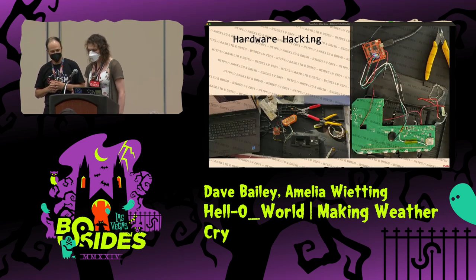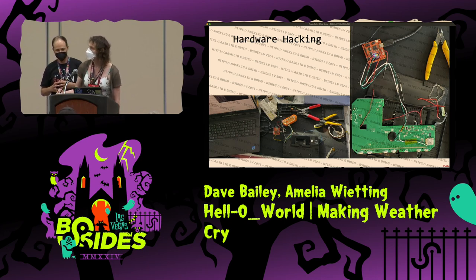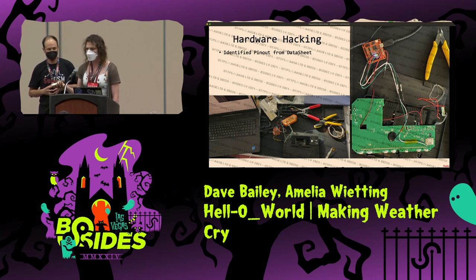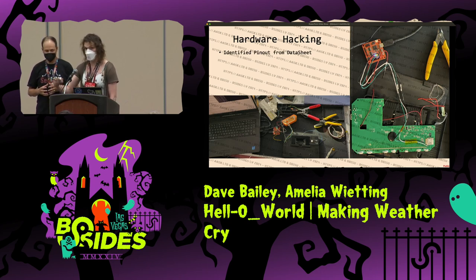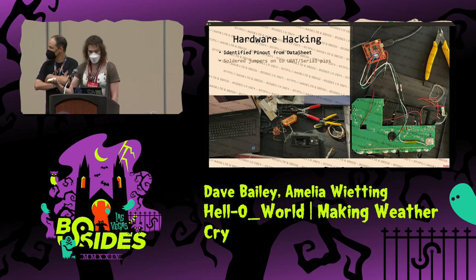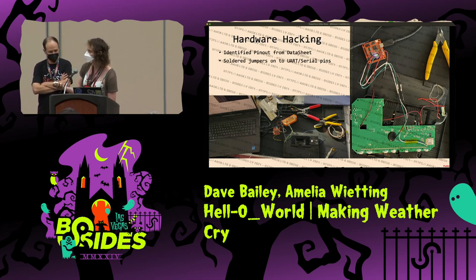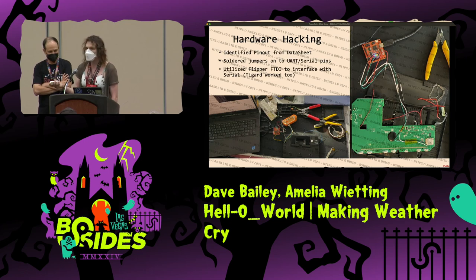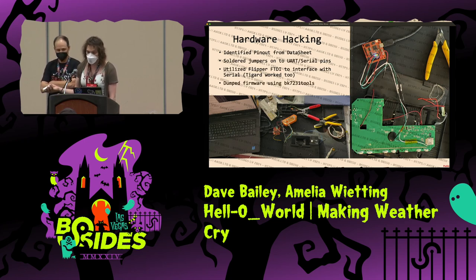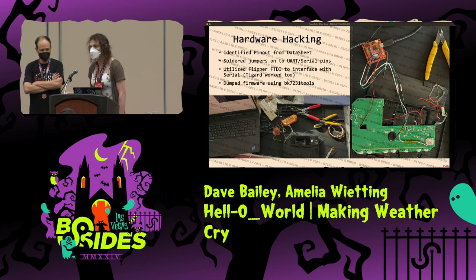At this point we had enough data to break out the tools. Using the pin-out we identified UART 0 and UART 1. On UART 1, it was just spitting out plain text debugging messages while booting up — to the point where we found what turned out to be secrets in there. We soldered jumpers to the UART serial pins and used the Flipper FTDI, finding the grounding more stable than the tie guard. I used an open-source tool called BK7231 tools to dump the firmware, and it pulled it really easily.